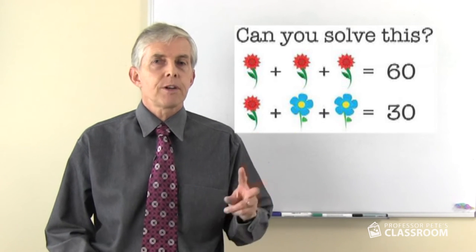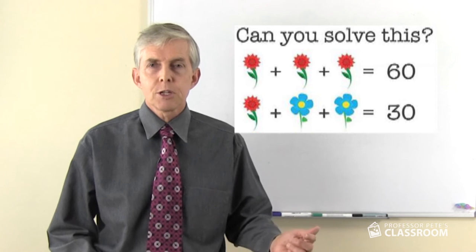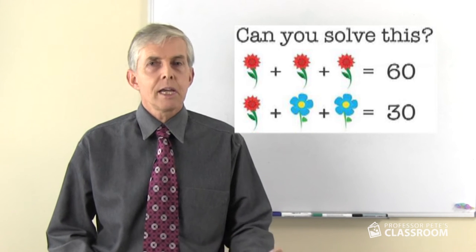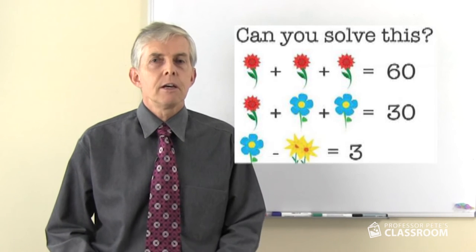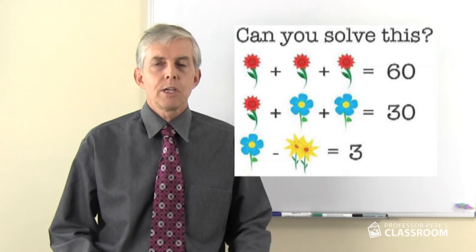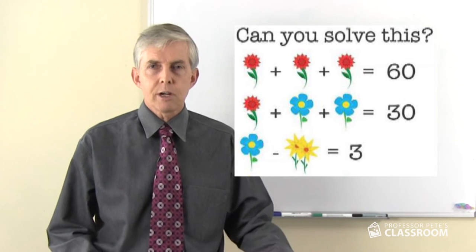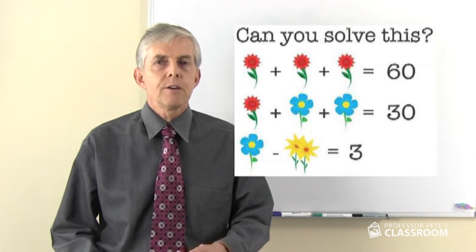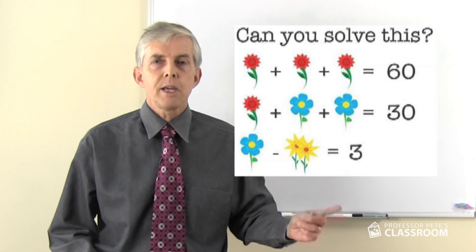In the second line we have a red flower and two blue flowers equaling 30, clearly the blue flowers are each worth five. Then the third line, one blue flower take away two yellow flowers equals three. Because the blue flower is worth five, the two yellow flowers must each be equal to one.